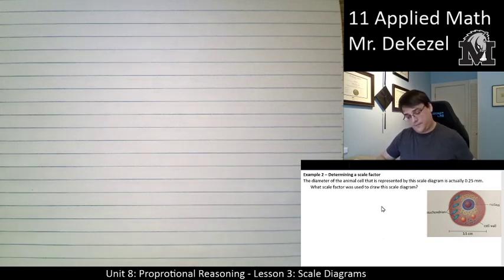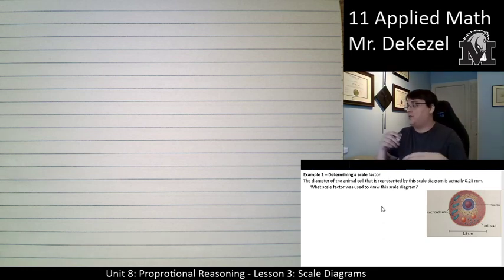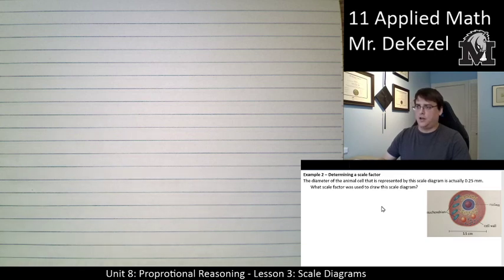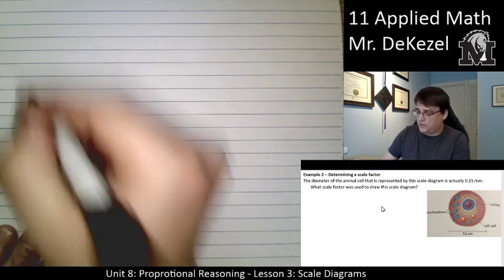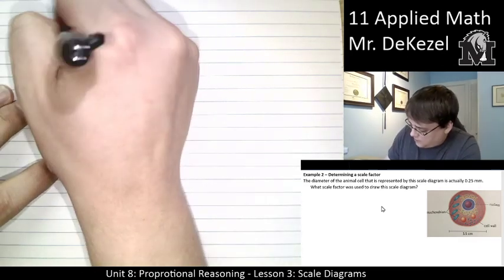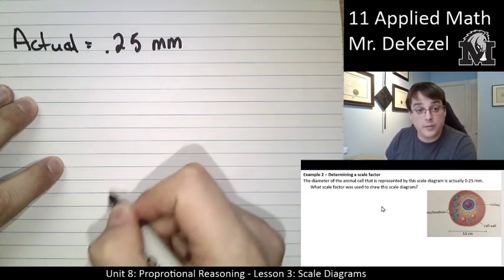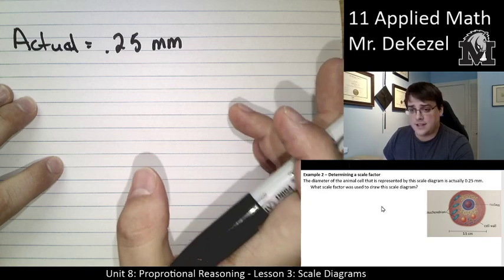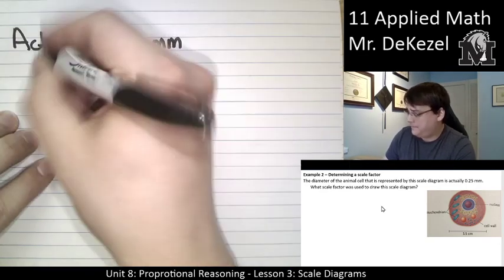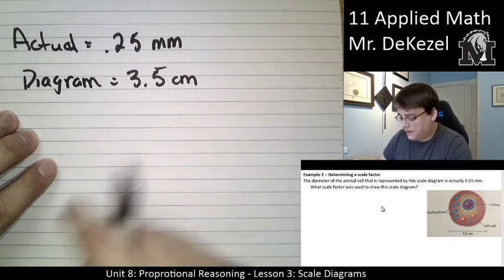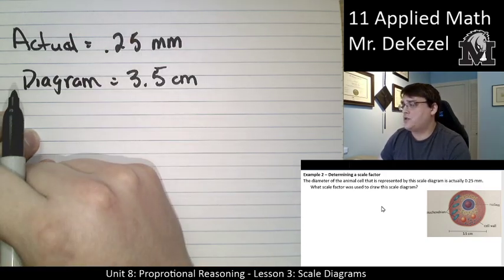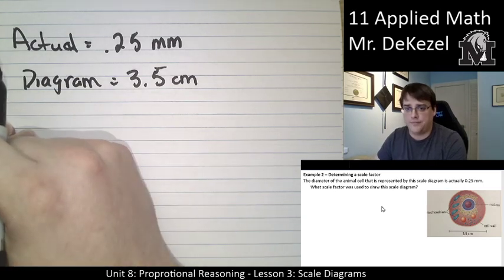So we're going to talk about scale factor. We're going to talk about a concrete number that we can use to demonstrate how much larger, how much smaller something is than the original object. So the diameter of this animal cell, the scale diagram, it is actually 0.25 millimeters. So in actuality, in real life, this is 0.25 millimeters, very small. On this diagram, you can see that it's labeled at 3.5 centimeters. So the diagram is equal to 3.5 centimeters. The question is what scale factor was used to draw the scale diagram.